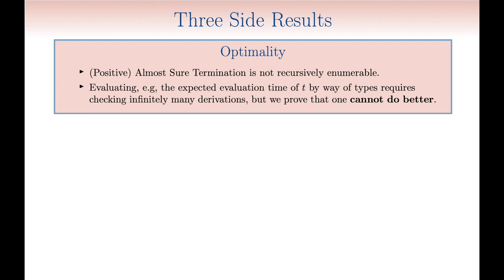Besides the two results we have just mentioned, we also prove some side results. The first one states that the fact our type system requires infinitely many derivations to be considered when checking a term for termination is somehow inevitable due to strong recursion theoretic limitations.